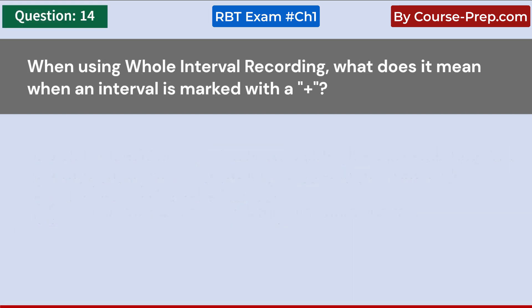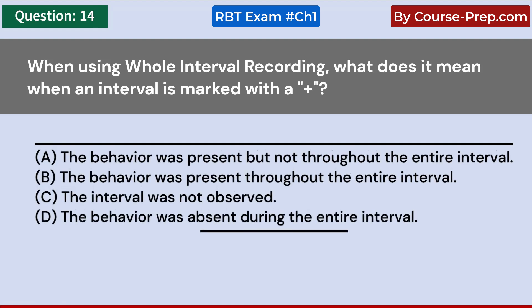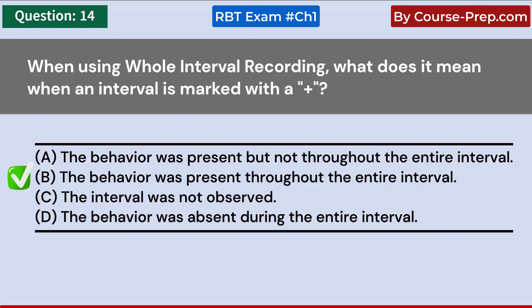When using whole interval recording, what does it mean when an interval is marked with a plus? A. The target behavior occurred intermittently during the interval. B. The target behavior occurred throughout the entire interval without stopping. C. The target behavior did not occur at all during the interval. D. The target behavior started at the end of the interval. Answer B: The target behavior occurred throughout the entire interval without stopping.